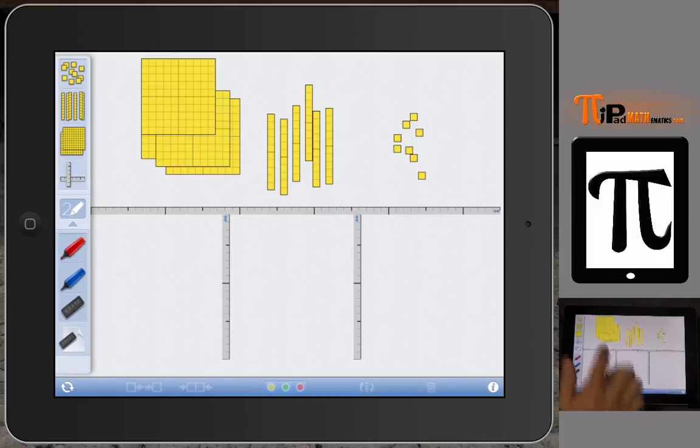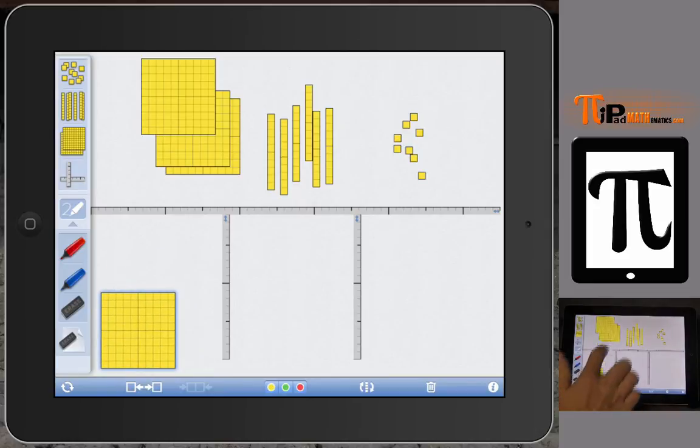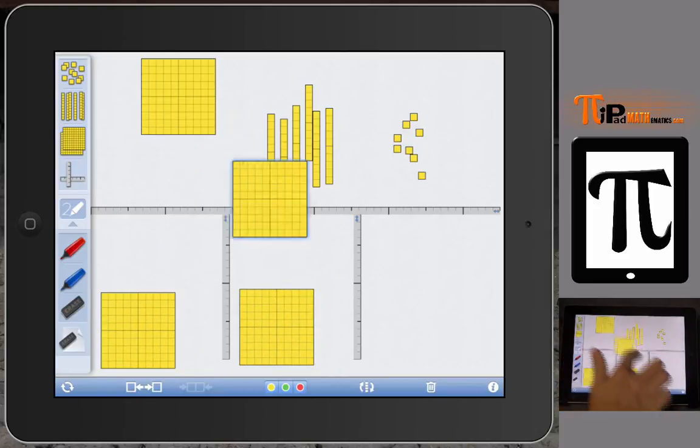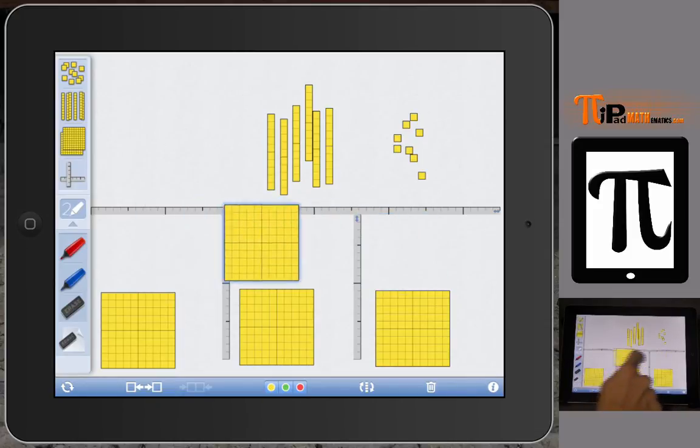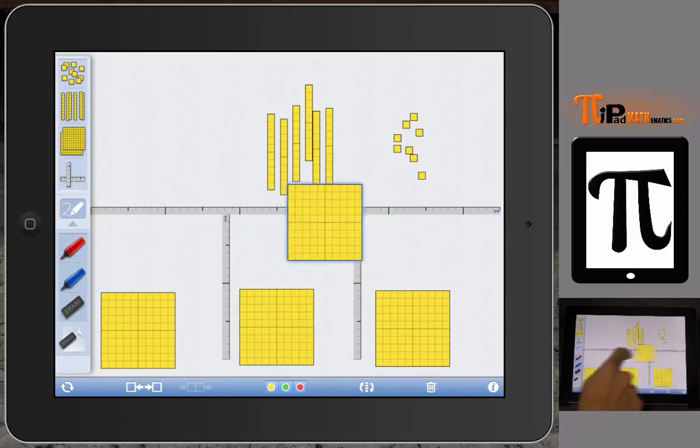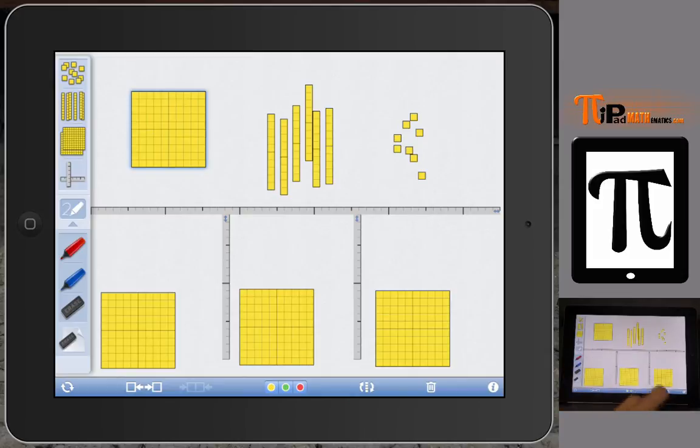We have one flat goes here, one flat goes here, one flat goes here, but I got one left. And because I don't have enough to go into each group, then this needs to be divided up. It needs to be broken down, it needs to be regrouped.